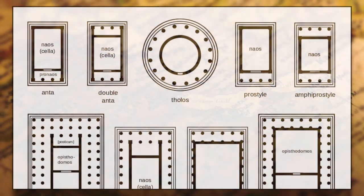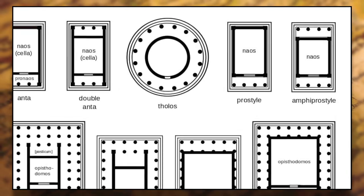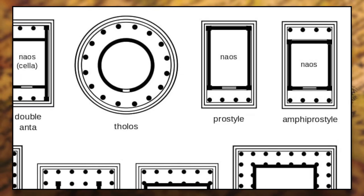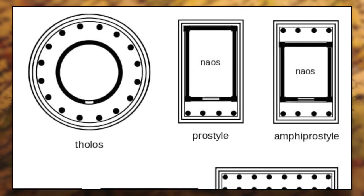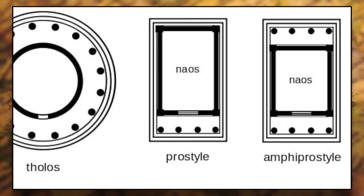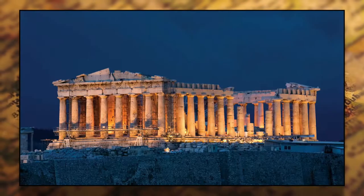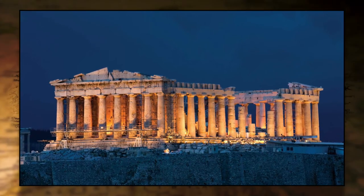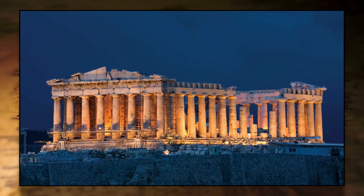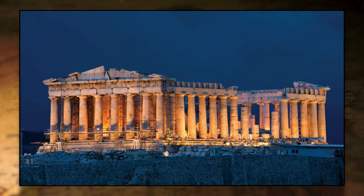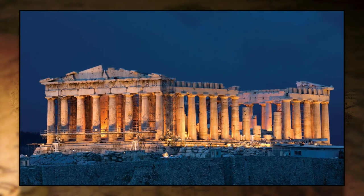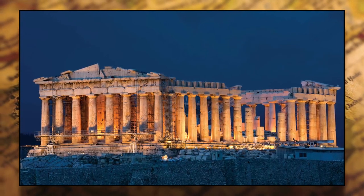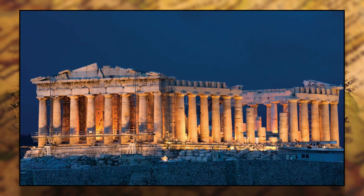Now let's combine everything we've discussed. A small Ionic temple with four columns on the front and no columns wrapping around the sides or back would be called a tetrastyle, Ionic, prostyle temple. Take a look at this image of the Parthenon — can you figure out how to describe it? The Parthenon is an octastyle, Doric, peripteral temple. It has eight columns on the front, it's built in the Doric order, and it has columns running the entire way around the temple.